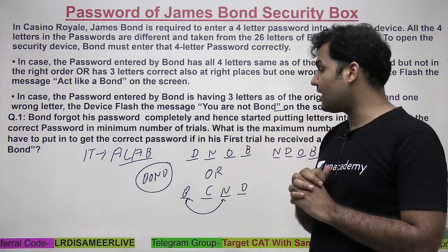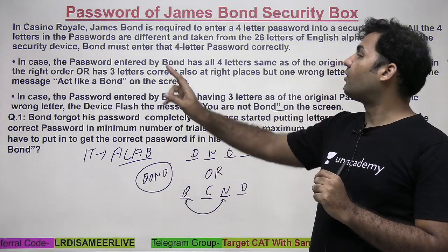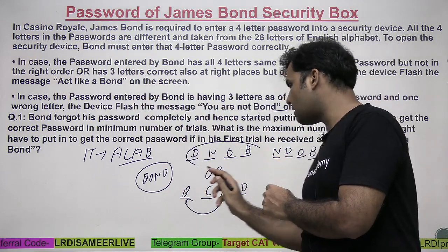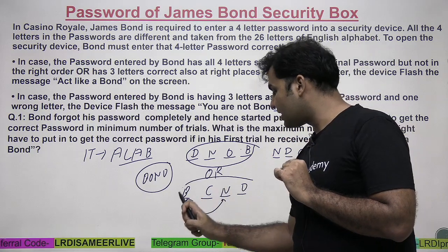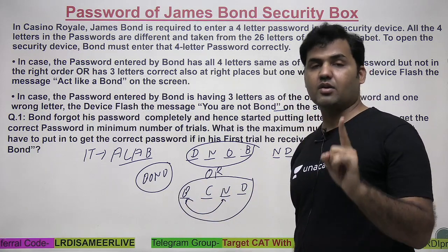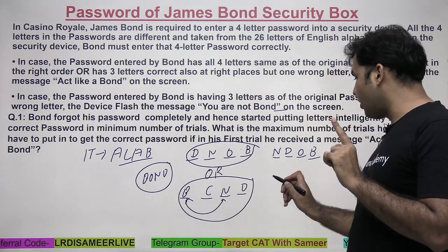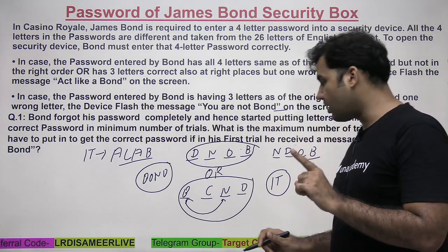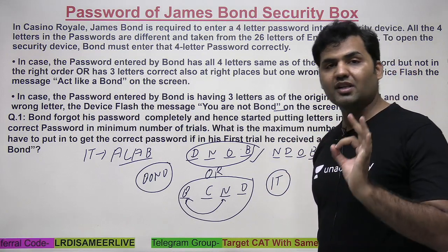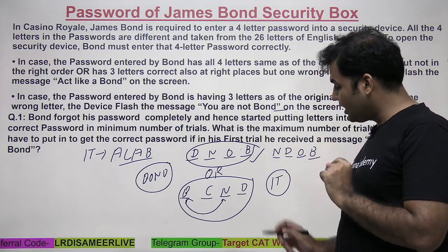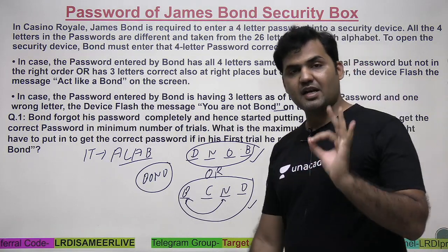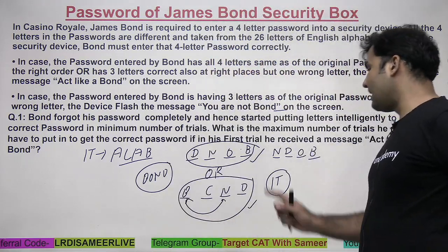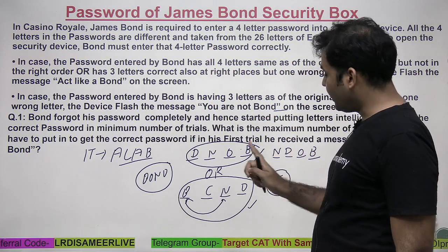But if he changes any of those two positions and gets the message 'you are not bond,' that tells him he's in the case of three correct letters and one wrong letter. So one more trial — changing two letter positions — will tell Bond whether he's using all four same letters or three correct at right places with one wrong letter.